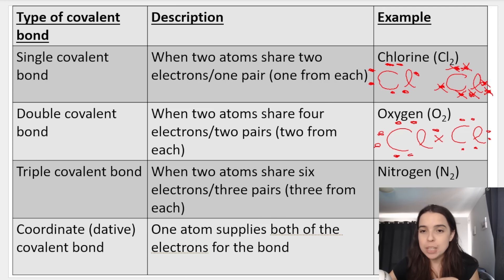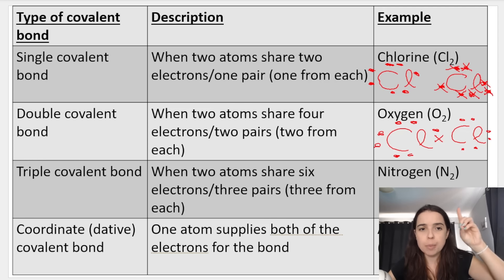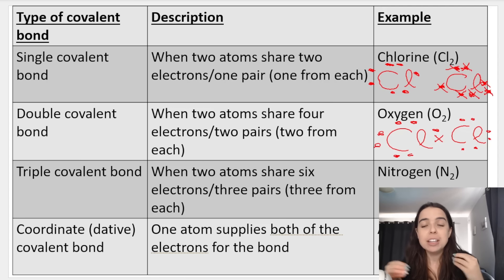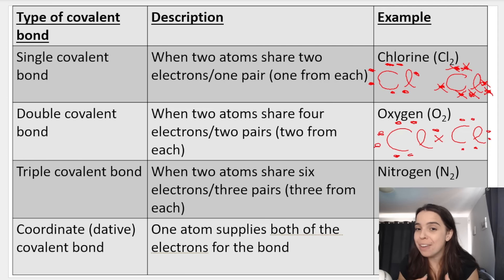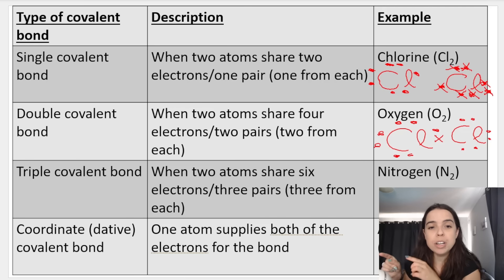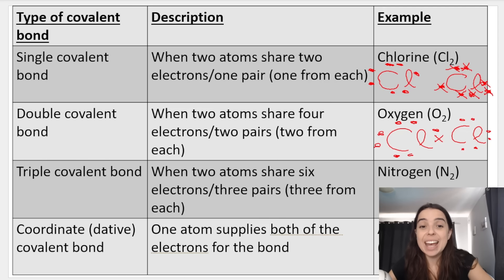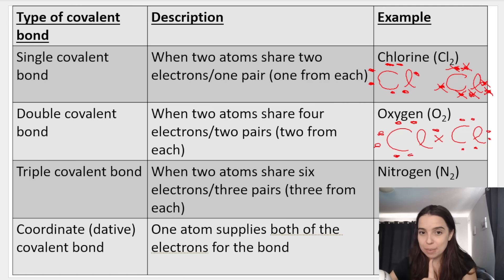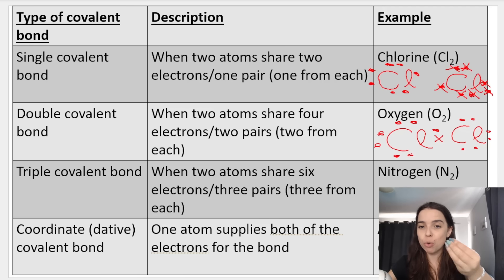But sometimes we can't form a single, double, or triple covalent bond like a normal covalent bond. Sometimes a special covalent bond gets formed, and this is called a coordinate or dative covalent bond. This happens when one atom supplies both of the electrons for the bond.